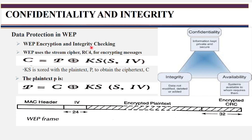In WEP, encryption and integrity checking work as follows. For encryption it uses the RC4 encryption algorithm, which is a stream cipher — it encrypts the message in sequence. The equation used is: ciphertext C = P XOR keystream. P is the plain text. The keystream is RC4(S, IV), where S is the shared key and IV is the initialization vector — a random number. The keystream is XOR'd with the plain text to get the ciphertext.